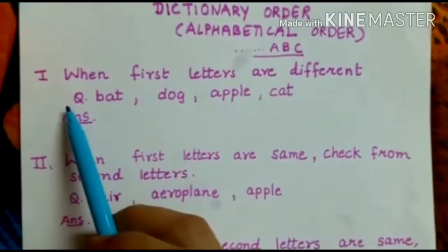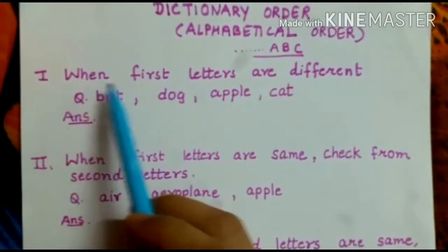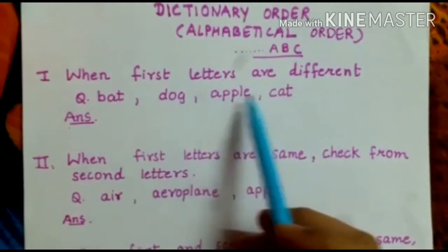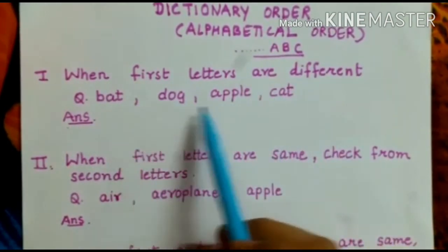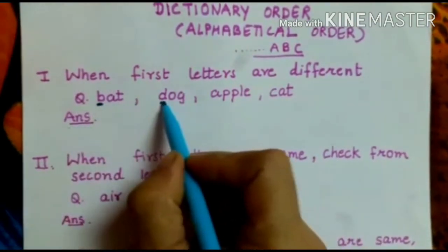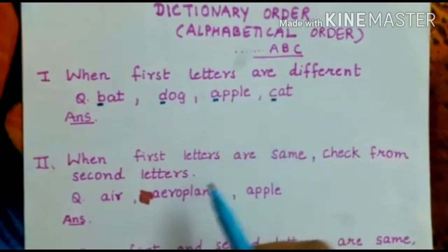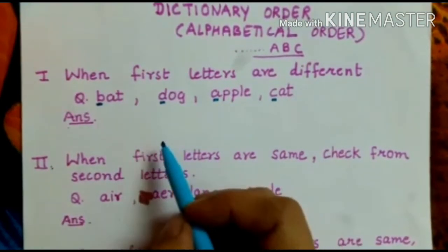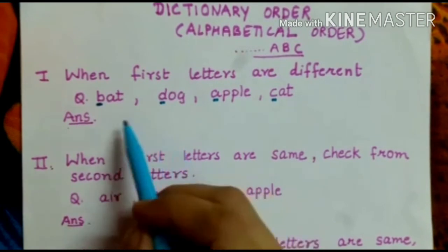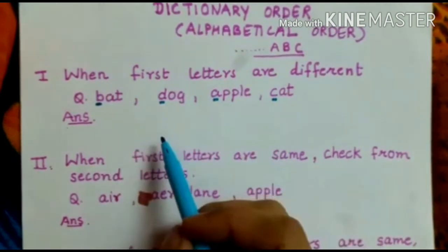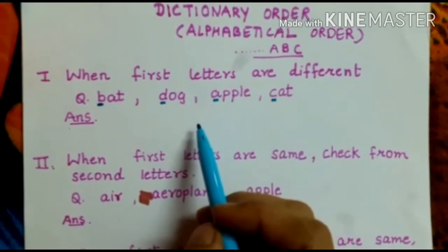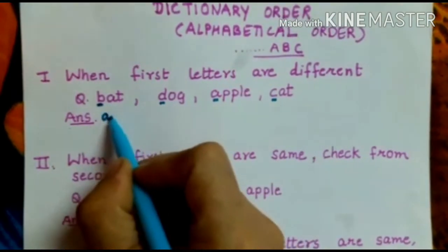In the first case, when first letters are different — like bath, dog, apple, cat — we have to check the first letters and decide which alphabet will come first. Can you tell me out of B, D, A, and C, what comes first? You are right — A comes first, so we will write down first: apple.